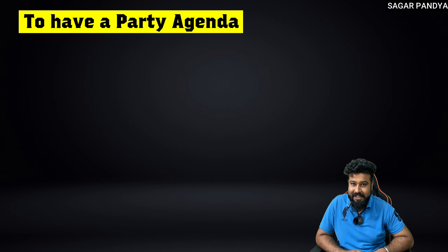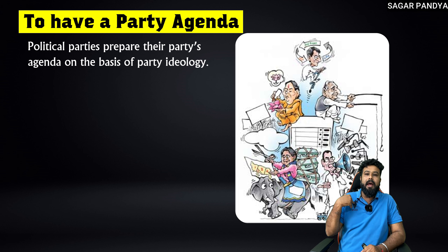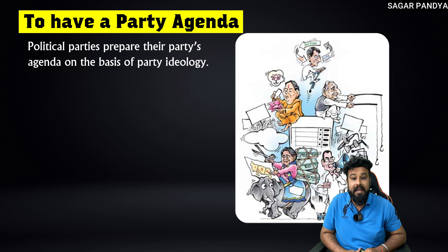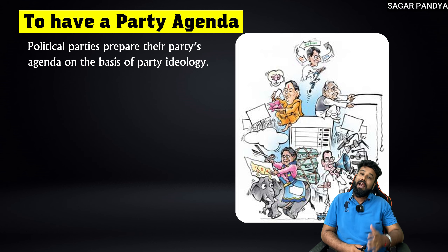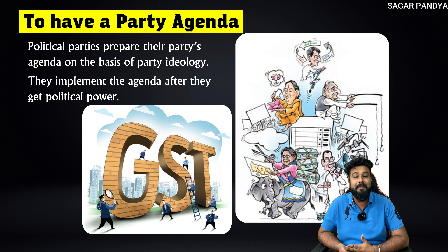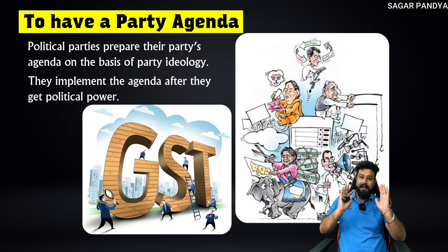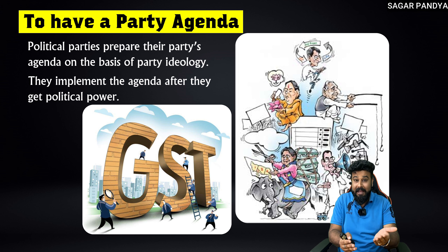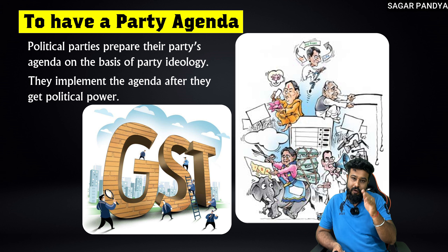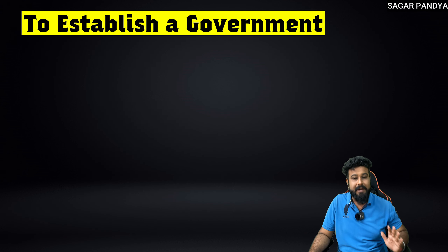The third characteristic is to have a party agenda. A political party prepares their party's agenda on the basis of their ideology. They implement the agenda after they get political power. When the party's ideology forms the basis of their promises to voters, and then they win elections and come to power, that promise-list becomes their agenda — a to-do list. That is the third important characteristic.